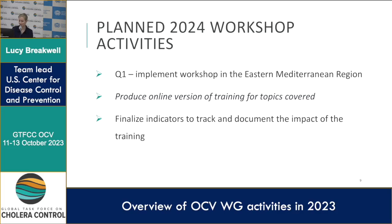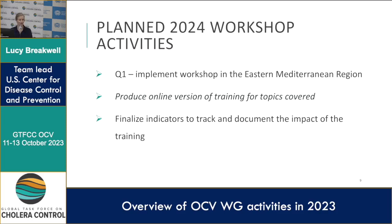One of our original objectives was producing an online version of the training for the topics covered. Some informational pieces are standardized and could be published for reference, but the individual country adaptation requires more thinking. Additionally, since CDC is funding many of these workshops, we want to make sure we have indicators to track impact — reporting back on whether we're seeing improvements in quality. Anecdotally, ICG requests are getting better, but finding ways to document and justify to funders that we're making a difference is what we need to do next.